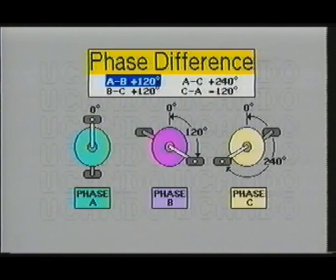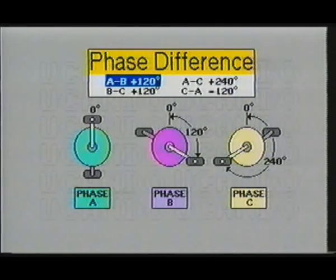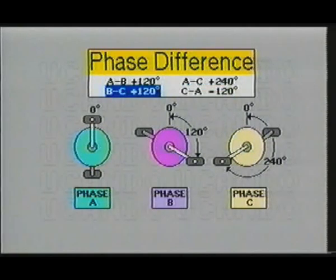To illustrate the effect of three-phase electricity, we will use three sets of bicycle pedals. Each pedal is set 120 degrees from the other two pedals. The front pedal of phase A starts at zero degrees, the front pedal of phase B starts at 120 degrees, and the front pedal of phase C starts at 240 degrees.